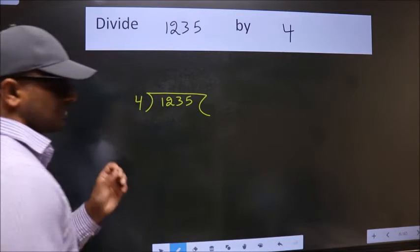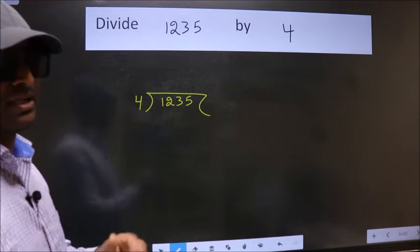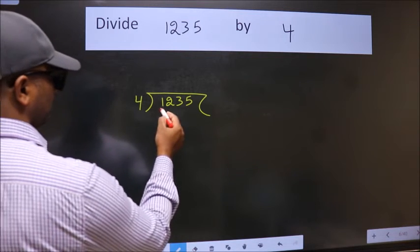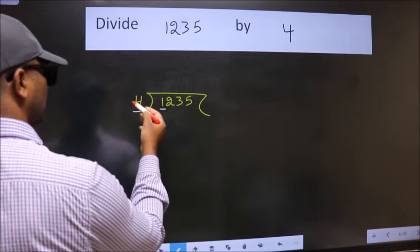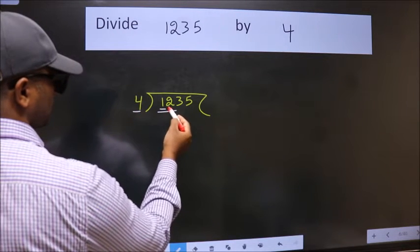This is your step 1. Next, here we have 1, here 4. 1 is smaller than 4, so we should take two numbers: 12.